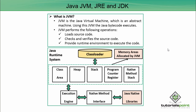JVM also provides the definition for the memory area, class file format, register set, garbage collected heap, and fatal error reporting. JVM is a specification where the working of the Java Virtual Machine is specified, but the implementation provider is independent to choose the respective algorithm. Its implementation has been provided by Oracle and other companies, and is known as JRE. Whenever we write the Java command on the command prompt to run a Java class, an instance of JVM will be created.